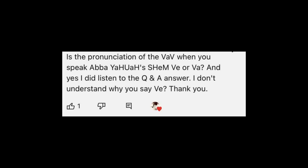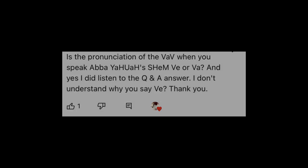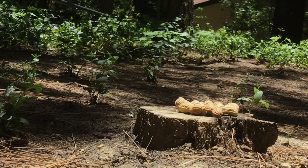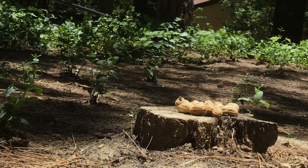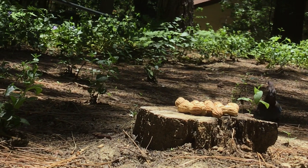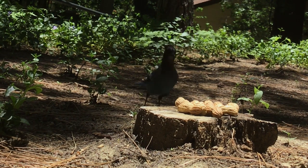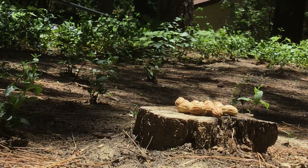Is the pronunciation of the Vav, when you speak Abba Yahuwah's name, V or Va? I did listen to the Q&A answer but I don't understand why you say V. So when we pronounce his name, we pronounce it Yo-Heh-Vo-Heh. A common pronunciation of his name is Yahuwah. They're trying to get to the bottom of why we call him what we do. Today they pronounce the letter Ya-Ha, and then it's the Va, and then U-A. We use Yo-Heh-Vo-Heh as a starting point.